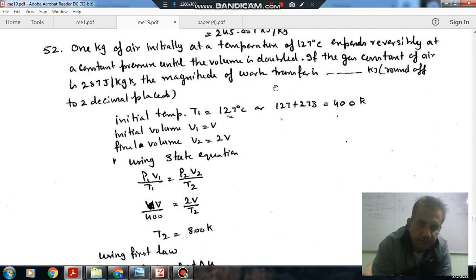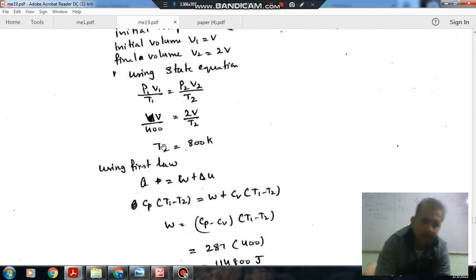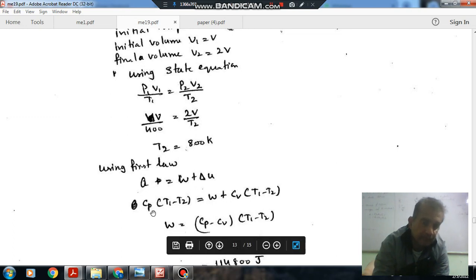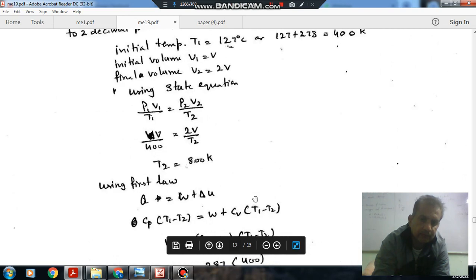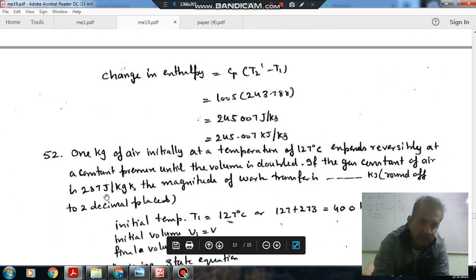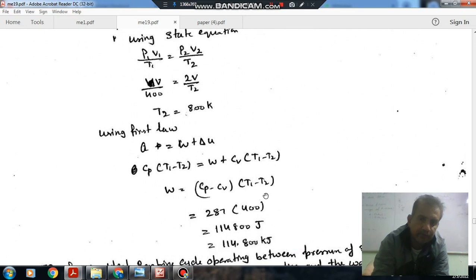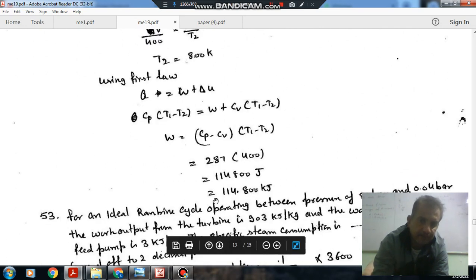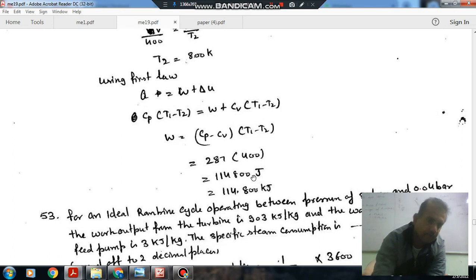Using the state relationship, we can find out temperature T2 also. P1 equals P2, so we can find out T2. Now we have to find out the magnitude of work done. In constant pressure, using first law of thermodynamics, Q equals ΔU plus W. In constant pressure process, Q is Cp(T2 - T1) and W is R(T2 - T1). Cp minus Cv is R, R is 287. Putting the value of T1, T2, and Cp minus Cv that is R, we can get W, which is 114,800 joules or 114.8 kJ. Thank you.